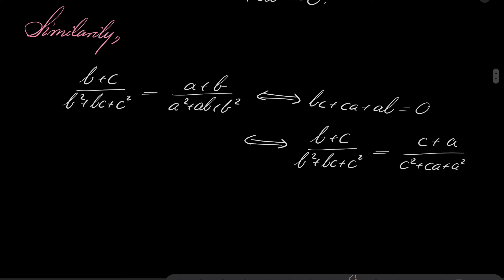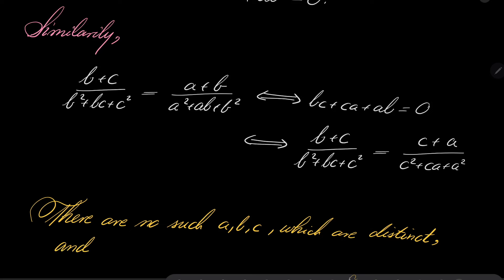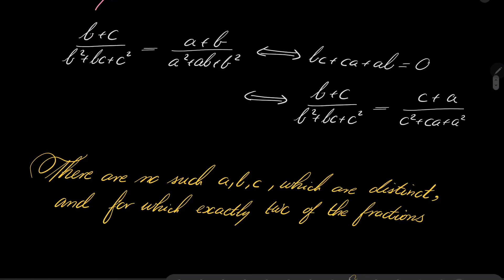So the answer to our problem is no, there are no such numbers a, b, and c which are distinct and for which exactly two of the fractions are equal. And this closes our problem, there are no such numbers.